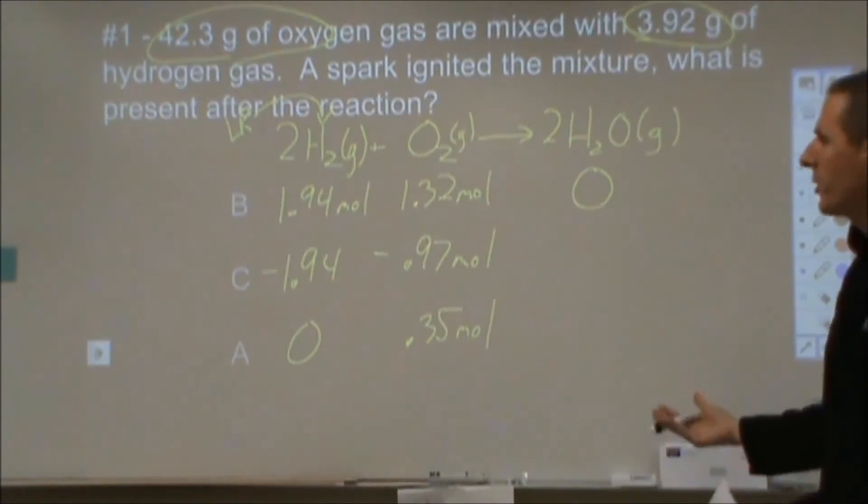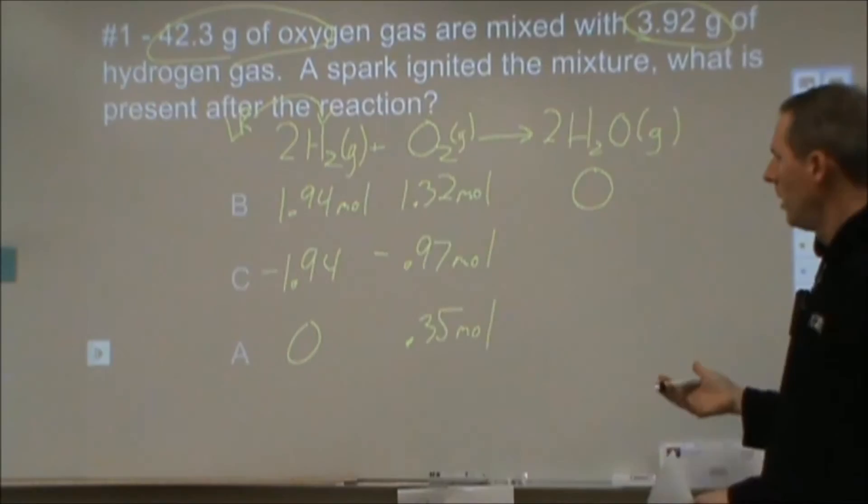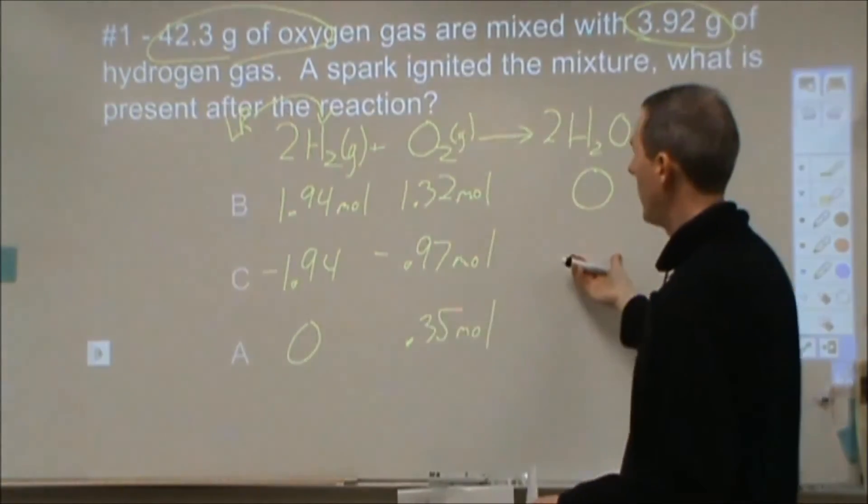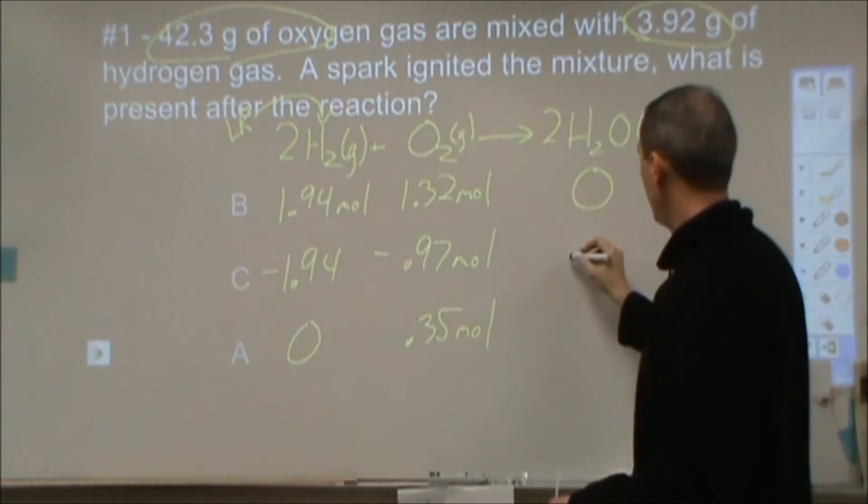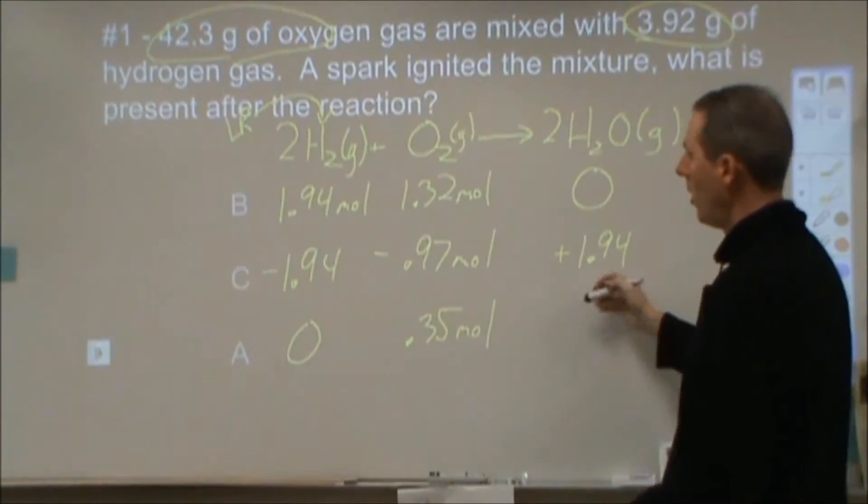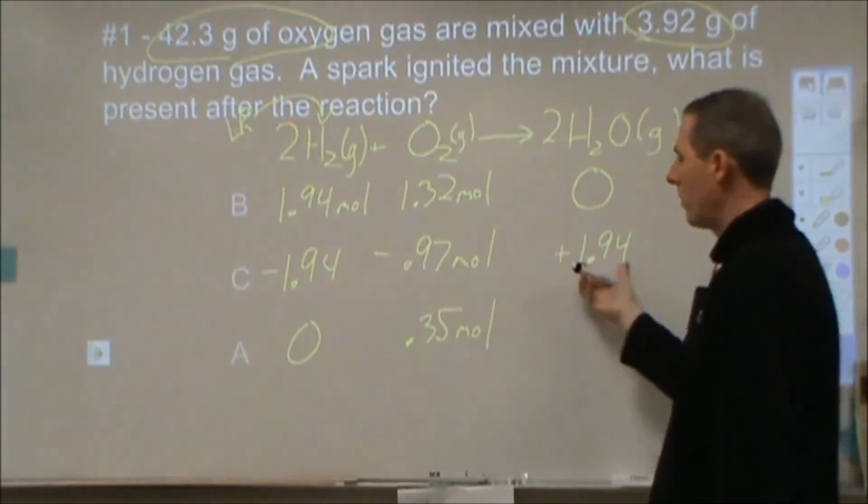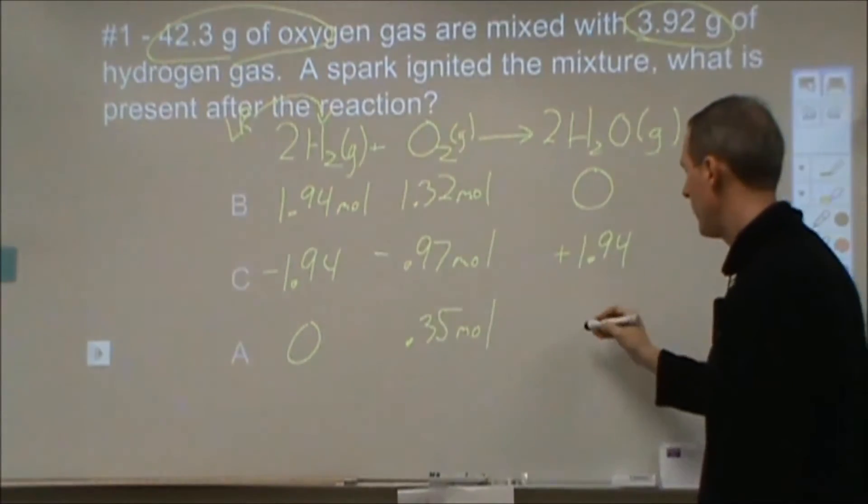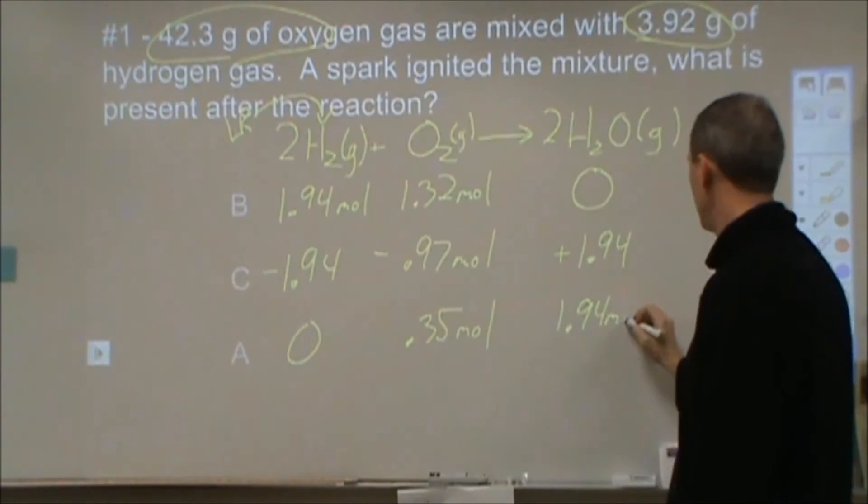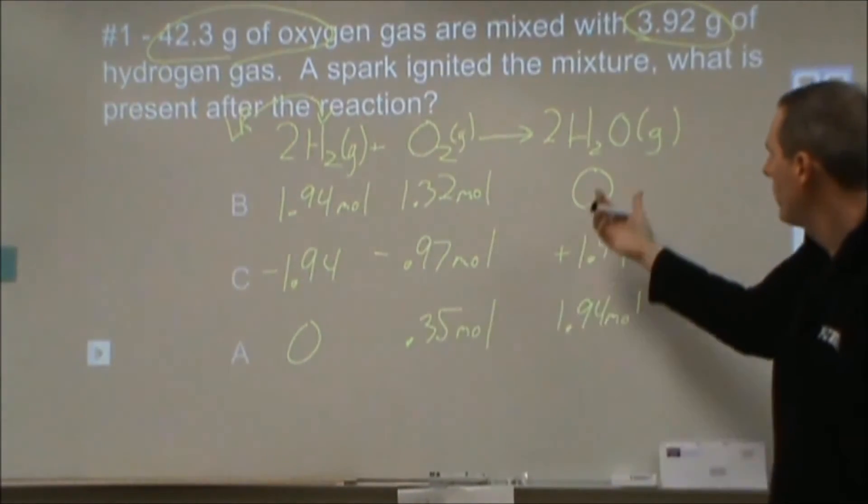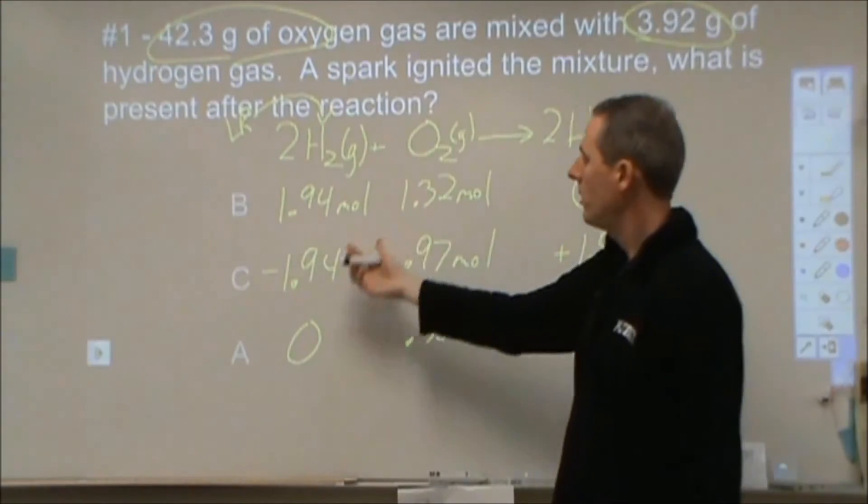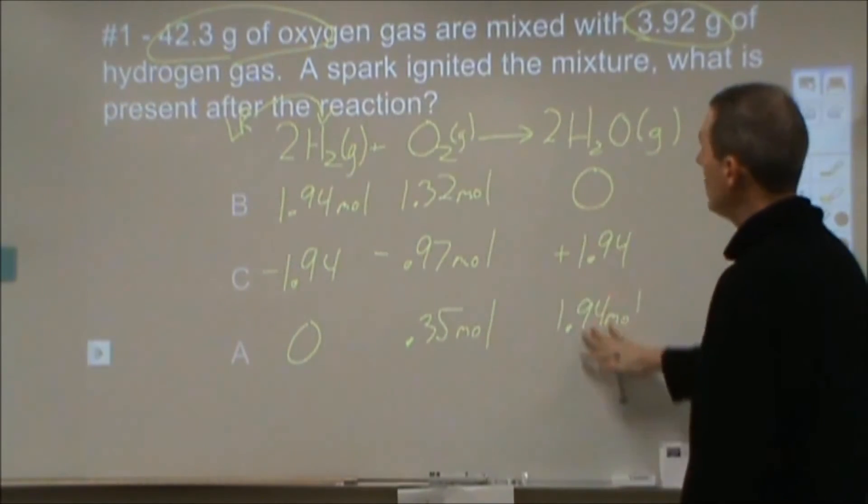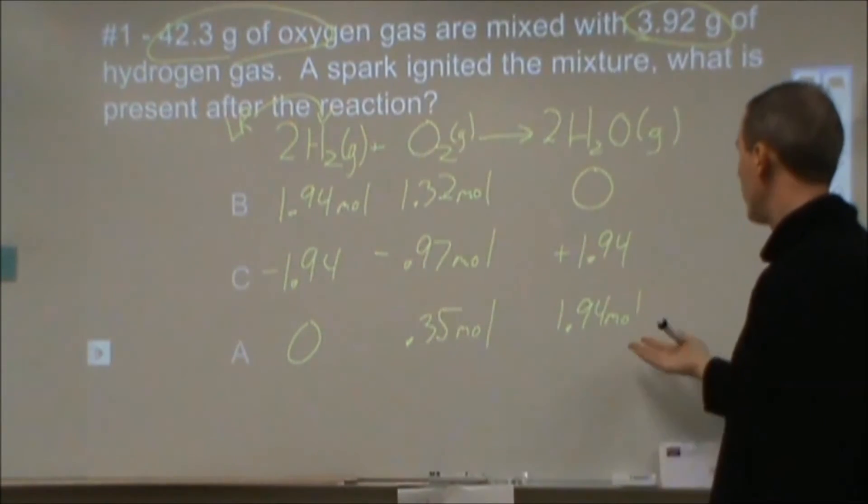So now that we've situated what's actually going to happen, now we can figure out how much water we're going to have. So the water is going to be the same as the amount of hydrogen that reacts. It's a two to two ratio. So we're going to increase this by 1.94 moles. Alternatively, we could have said that it's going to be double this amount which is going to give us the 1.94 because you make two waters for every one oxygen. But at the end of the day, you're going to end up with 1.94 moles of water, 0.35 moles of oxygen. Your hydrogen will be the limiting reagent. It's gone.